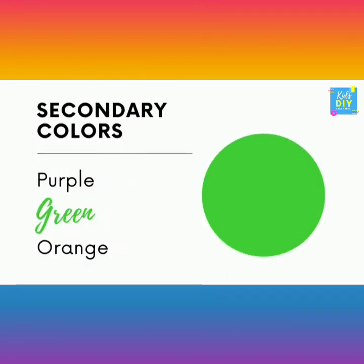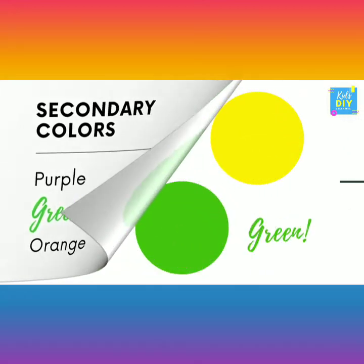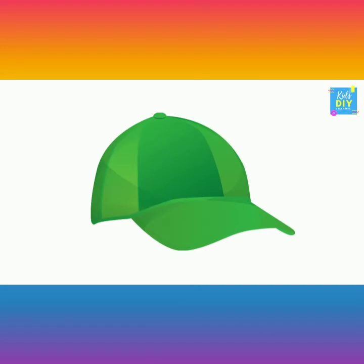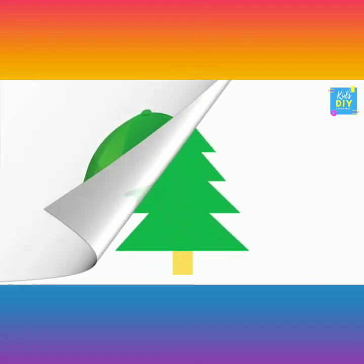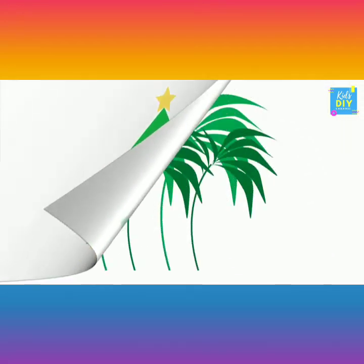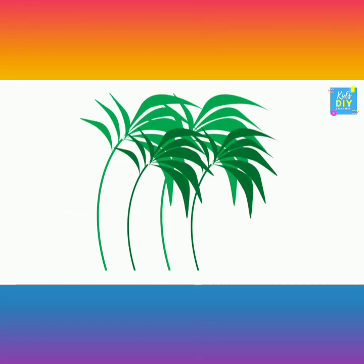The next secondary color is green. By mixing blue and yellow color, we get green. The hat is green. The Christmas tree is green. The plants are green.